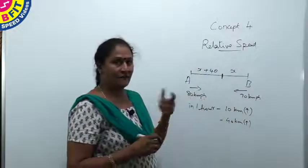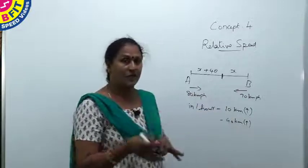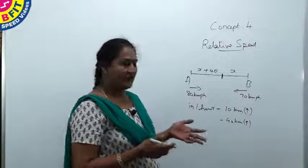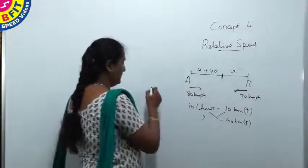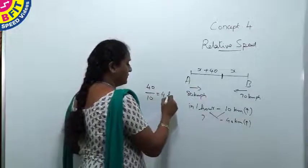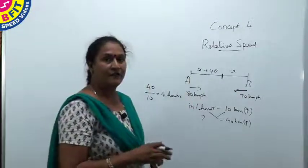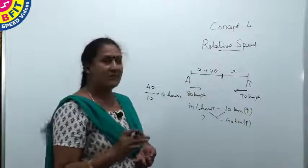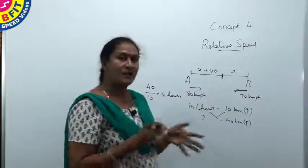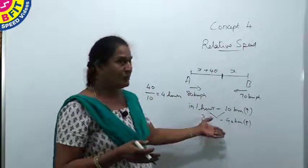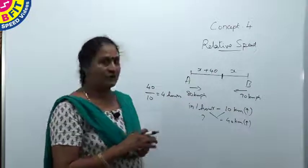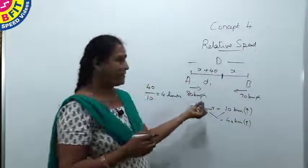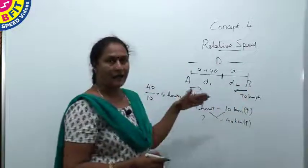When the trains have traveled for 1 hour, the faster train covers 10 kilometers more. To cover 40 kilometers more, using direct proportion — 40 ÷ 10 = 4 hours. So the trains have traveled for 4 hours, at which point the faster train has covered 40 more than the slower train. To find the distance between A and B, we add the distance covered by each train.